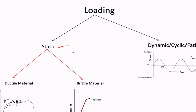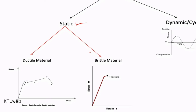Let us discuss about the static loading situation. Static loading means the load will not change its magnitude or direction with respect to time. In case of static loading, you have two different situations — when a ductile material experiences a static load, or when a brittle material experiences a static load. Consider the very common stress-strain graph of a ductile material. This graph shows that at a particular yield point, the material will experience permanent deformation.